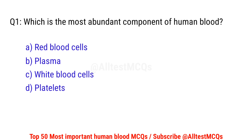Question number 1. Which is the most abundant component of human blood? Correct option is B. Plasma.